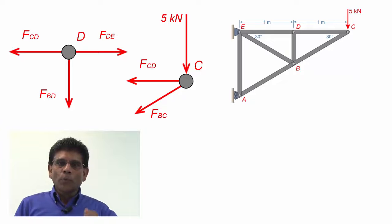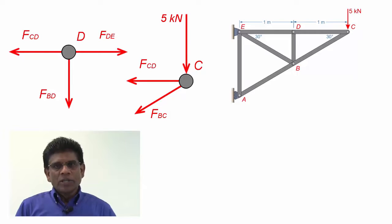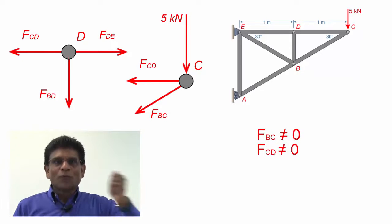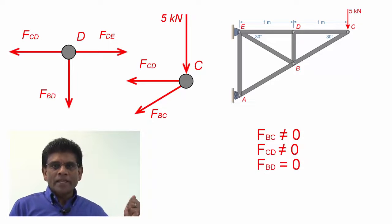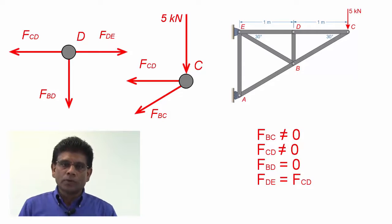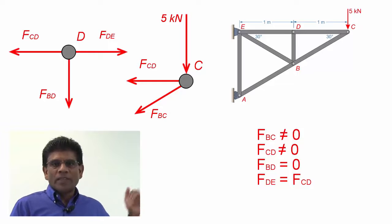Okay, I hope you completed the calculations. Now that you have member forces, check which member forces are zero. You will find that members BC and CD are no longer zero-force members. They carry load. But member BD is a zero-force member. You will also find members DE and CD carry equal loads. So, if you look at joint D, notice there are four obvious conditions.